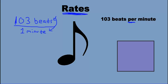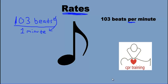Did you know that 103 beats per minute is the perfect rhythm to help save somebody's life? When you're doing CPR on somebody and you're pounding their chest at 103 beats per minute, you're going to increase their chance of surviving.